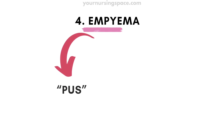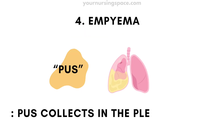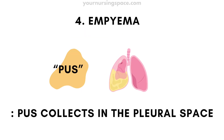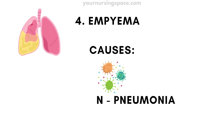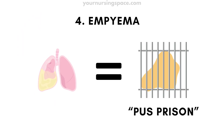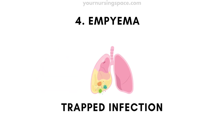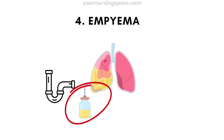Number four: empyema. Empyema sounds like pus, and that's exactly what it is. Empyema is when pus collects in the pleural space, usually due to an infection like pneumonia. Think of empyema equals pus prison — the infection gets trapped inside the pleural space, and a chest tube is needed to drain it out.